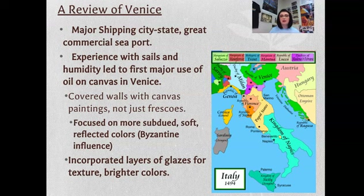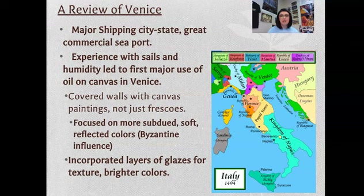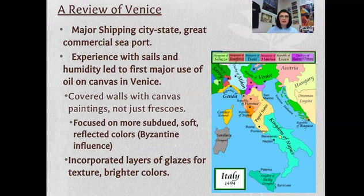Venice held the monopoly on shipping and had a port into the Mediterranean Sea. Because of this, Venice is actually one of the places that really started using canvas as a medium for painting — they were already familiar with canvas for sails. Plus, Venice is very humid, so canvas kept from curling up. Before this, artists would often paint on wood with oil paints, and the wood would warp from humidity, but canvas could withstand it because it was meant to be waterproof.